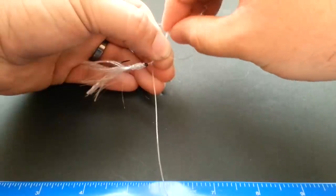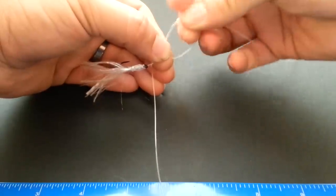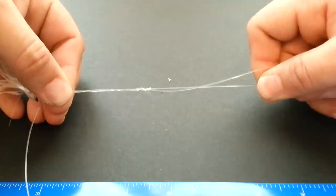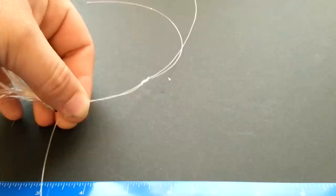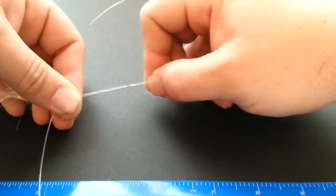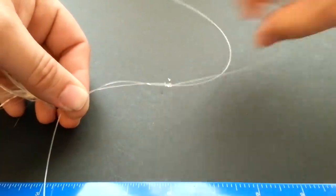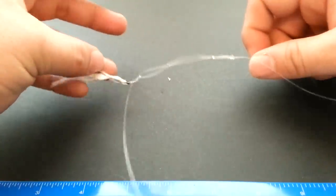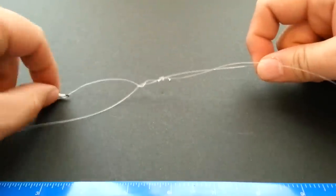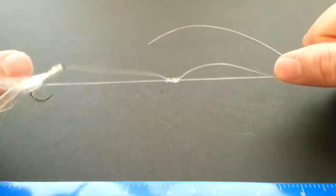So one, two, and three. Just tease that up a little bit, a bit of saliva. And you can see that knot. Hold your main line and your feather and just pull that down, and those two knots are going to butt up against each other.